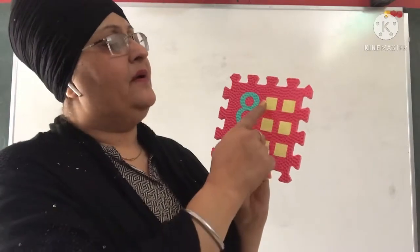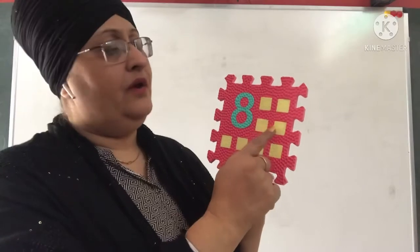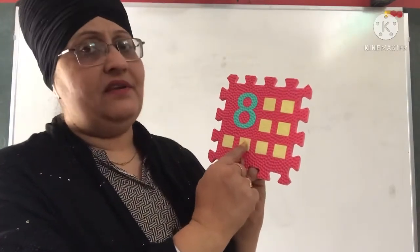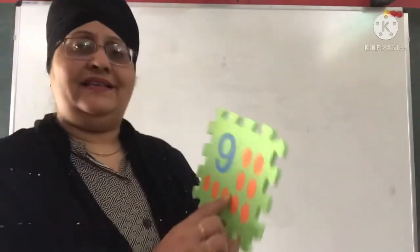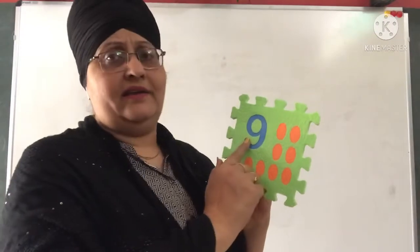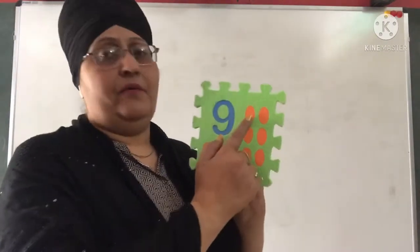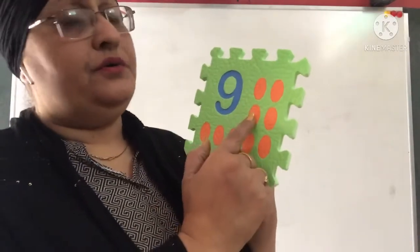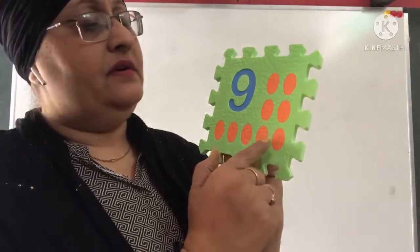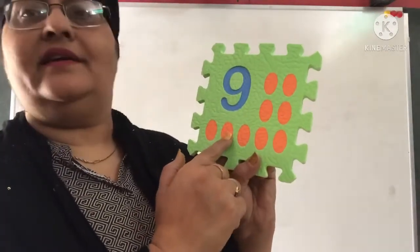Count with me: 1, 2, 3, 4, 5, 6, 7, 8. Next number is 9. This is number 9. 9. Let's count: 1, 2, 3, 4, 5, 6, 7, 8, 9.